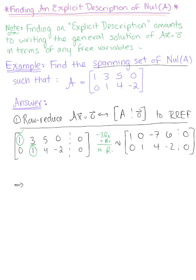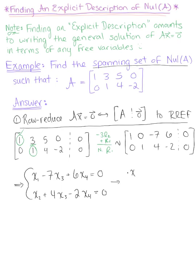This row reduced echelon form is equivalent to the linear system: x sub 1 minus 7 x sub 3 plus 6 x sub 4 equals 0, and row 2 gives us x sub 2 plus 4 times x sub 3 minus 2 times x sub 4 equals 0. These are our basic variables. Solving for those basic variables, we have x sub 1 equals 7 times x sub 3 minus 6 times x sub 4, and x sub 2 equals negative 4 times x sub 3 plus 2 times x sub 4. x sub 3 and x sub 4 are free.